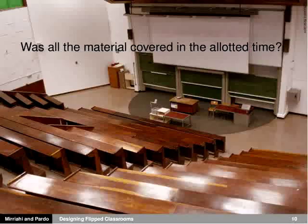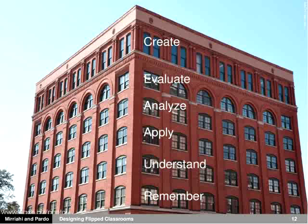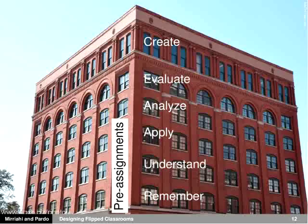Going back to this notion of what is the success criteria for your lecture — if the criteria is just to cover the whole material in the allotted time, then the pressure is on you just to go fast. But typically you need to go beyond that. You need to make sure that it is a success from the student point of view: that they really understood the concept, that the lecture was useful, and that it covered more cognitively challenging levels of Bloom's Taxonomy.